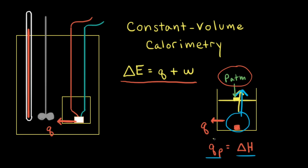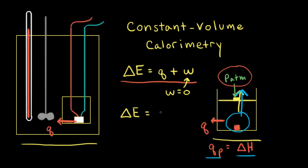Let's compare the example with the movable piston to our bomb calorimeter. Our bomb calorimeter has rigid walls, and therefore no work can be done, so the work done is equal to zero. When we plug that into the first law of thermodynamics, we find that the change in the internal energy delta E is equal to the heat transferred q. And since this is a constant volume calorimeter — the walls are rigid — we can write q sub v here.